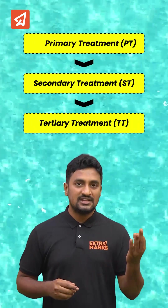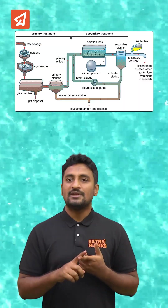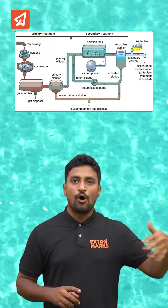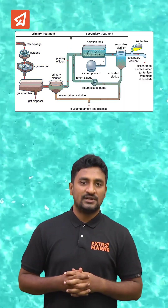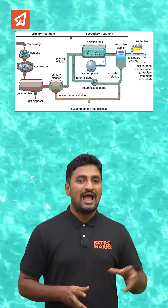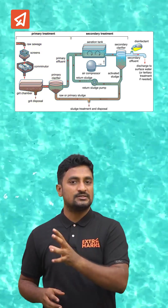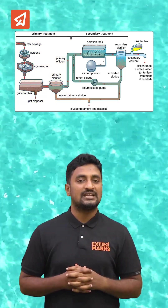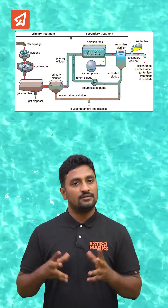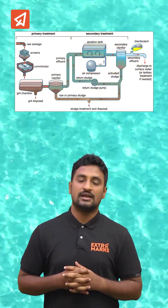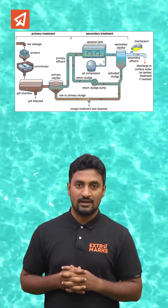It happens in three steps. In primary treatment, all the physical impurities are removed, and the primary effluent is passed down to the secondary treatment, which is also called biological treatment.